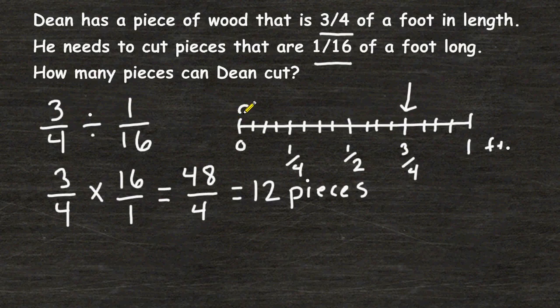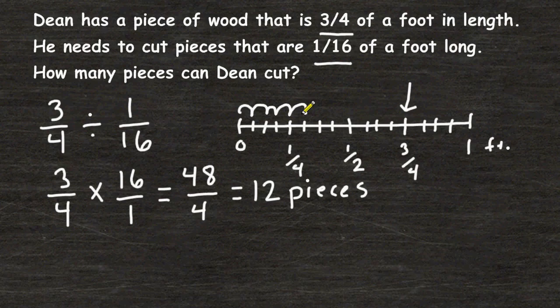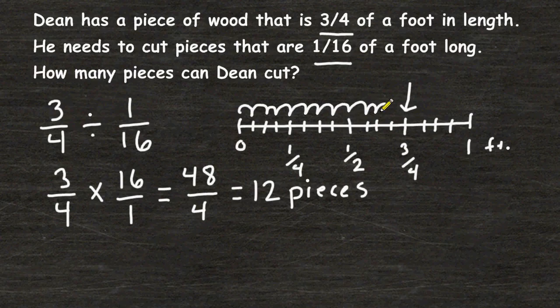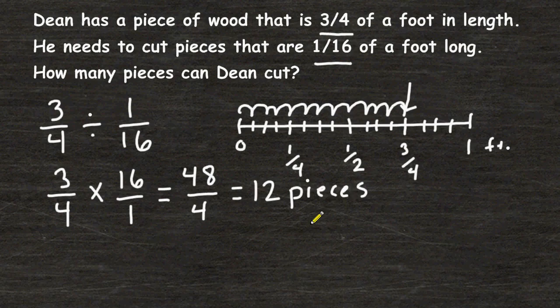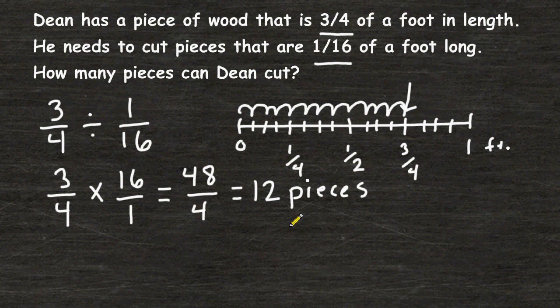And from this point to this point is exactly 1 16th. So that would be 1 piece of wood, 2 pieces of wood, 3, 4, 5, 6, 7, 8, 9, 10, 11, and 12. So we can see that 12 pieces of wood, the size of 1 16th of a foot, would fit exactly into a piece of wood that is 3 quarters of a foot in length.